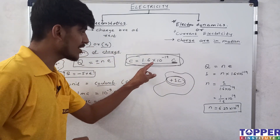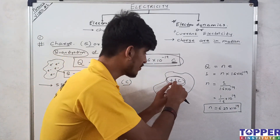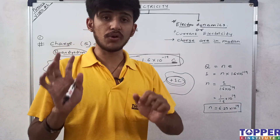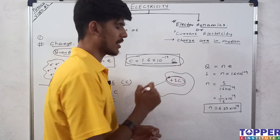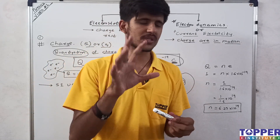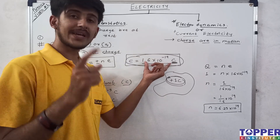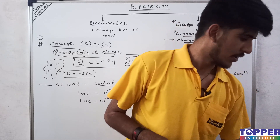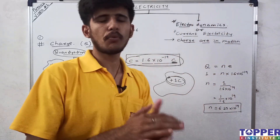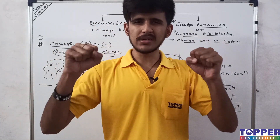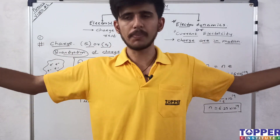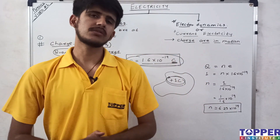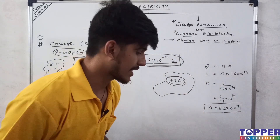Don't confuse the charge of an electron (1.6 × 10⁻¹⁹ C) with the charge of a body (e.g., one coulomb). The charge of a body is the actual total charge, while the charge of one electron is a very tiny value — 6.25 × 10¹⁸ electrons together make one coulomb. One very important property of charge: like charges repel each other (positive-positive or negative-negative), and unlike charges attract each other (positive-negative).